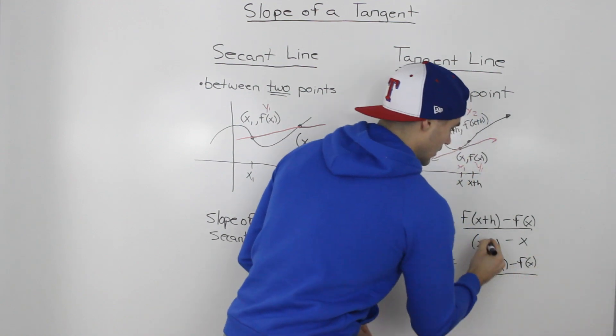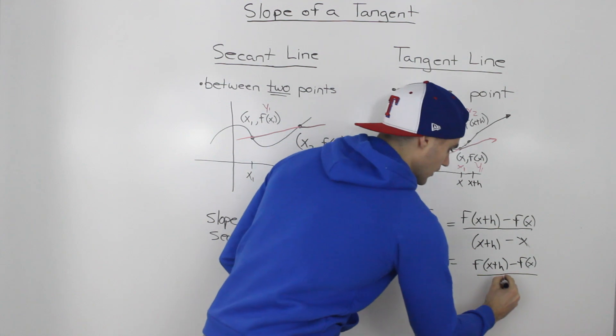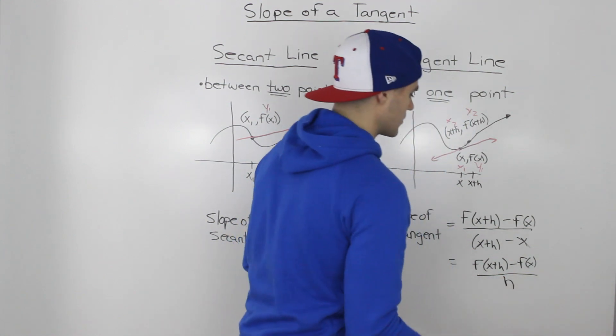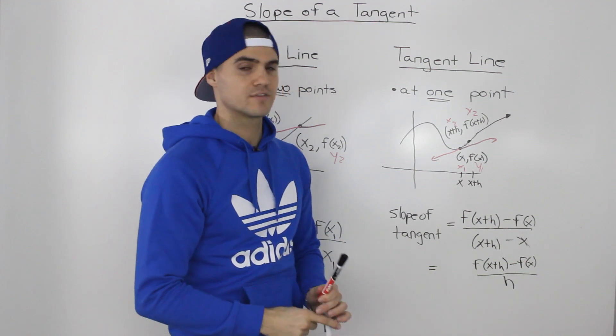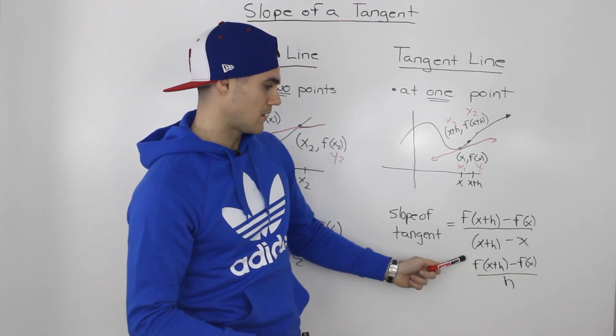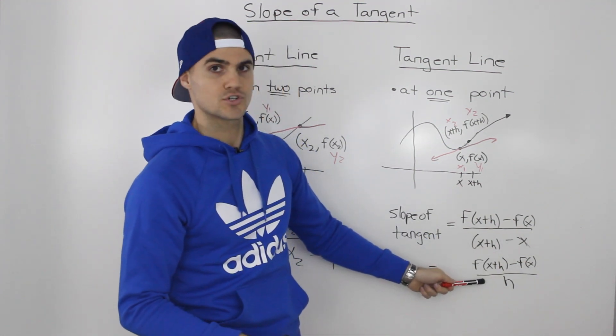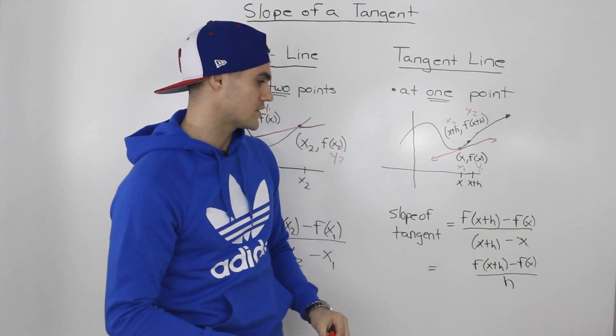But notice in the denominator how the x's will cancel out and we're just left with an h at the bottom. So that final expression here represents the slope of the tangent, and if you remember, that is the difference quotient that we went over in advanced functions.